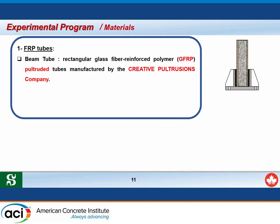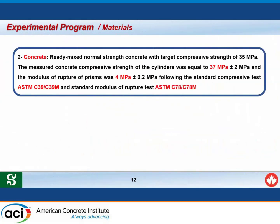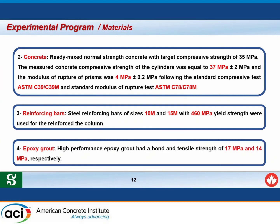Four different materials were used in the experimental program. The first is FRP tubes — two types: a beam tube and a column tube. The beam tube is a rectangular glass fiber reinforced polymer (GFRP) tube fabricated at Sherbrooke University. A table presents the mechanical properties and dimensions of the tubes. The second material is ready-mixed normal strength concrete with a target compressive strength of 35 MPa, used to fill the FRP tubes. The third material is reinforcing bars — size 10M and 15M — used to reinforce the CFFT column.